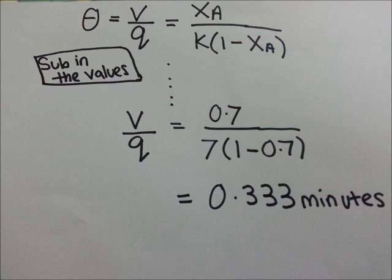We then sub in the value of conversion, XA, as 0.7 and the rate constant, K, as 7 minutes to the power of negative 1. The residence time is worked out to be 0.333 minutes.